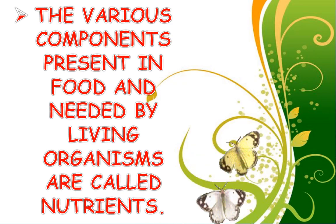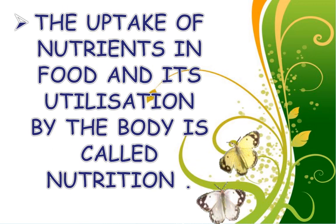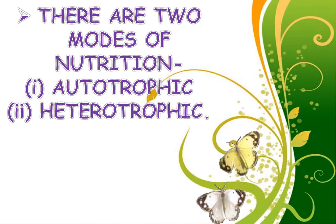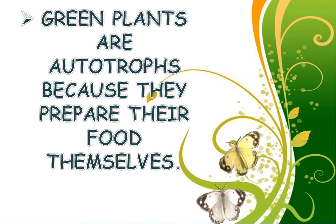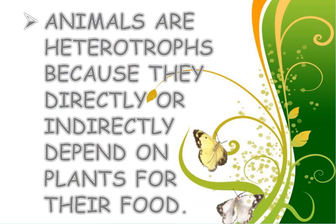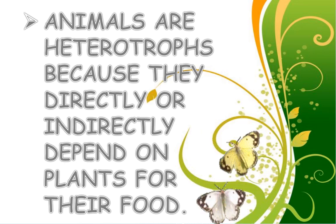The various components present in food and needed by living organisms are called nutrients. The uptake of nutrients in food and its utilization by the body is called nutrition. There are two modes of nutrition: autotrophic and heterotrophic. Green plants are autotrophs because they prepare their food themselves. Animals are heterotrophs because they directly or indirectly depend on plants for their food.